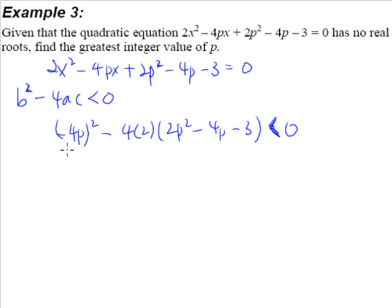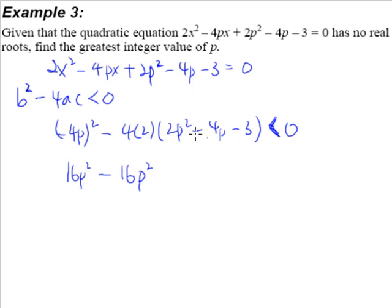Simplifying this, we'll get 16p squared. Now this is 8 here, so 8 multiplied by 2 gives us 16p squared. This is an 8, so 8 multiplied by 4 — negative times negative becomes positive — so 8 multiplied by 4 gives me positive 32p. Again, negative times negative, so 8 multiplied by 3 gives me positive 24, and all of this is less than 0.